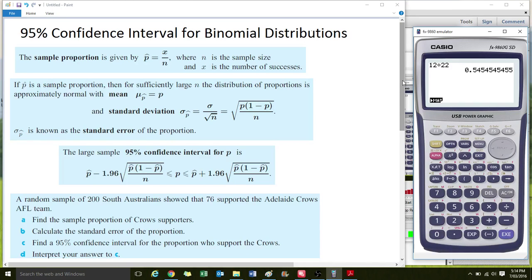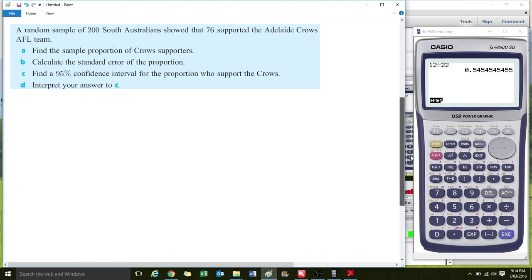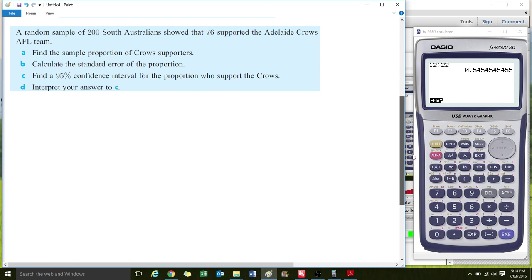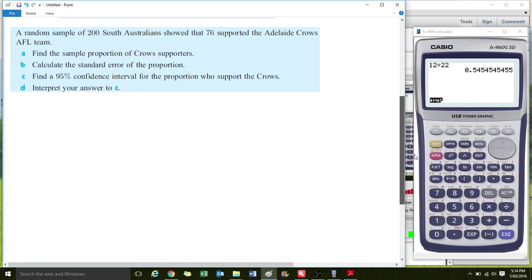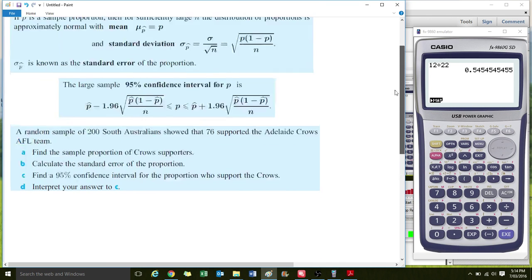So let's put this in with an example. A random sample of 200 South Australians showed that 76 supported the Adelaide Crows. Find the sample proportion.